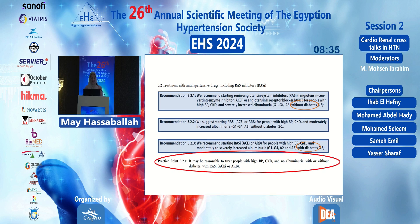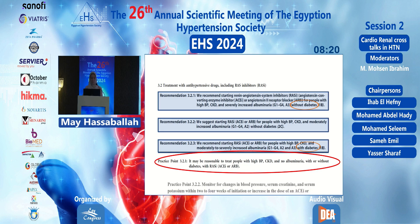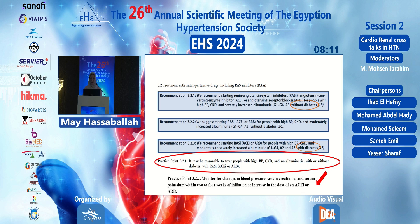As a practice point, it may be reasonable to treat people with high blood pressure and CKD even without albuminuria — with or without diabetes — using RAS inhibitors. There is a clear inclination to start treatment with RAS inhibitors. Serum creatinine and potassium must be monitored within two to four weeks of initiation or dose increase.